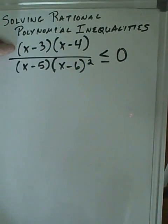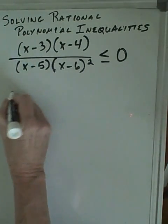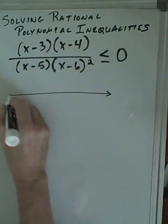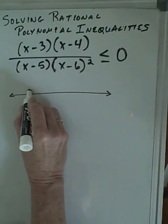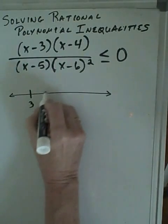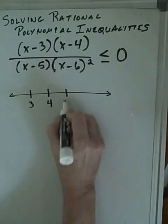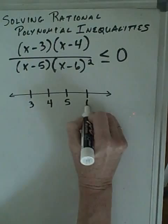And our critical values come from making the numerator zero or making the denominator zero. So, on a number line, we would test these points that would divide up our graph: three, four, five, and six.